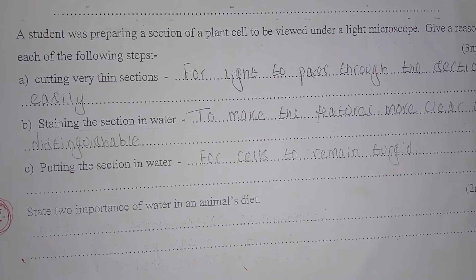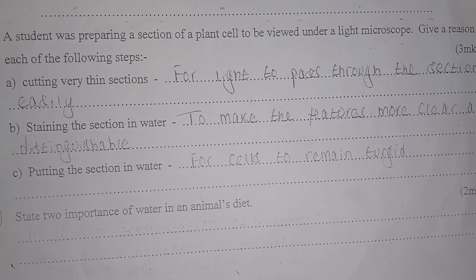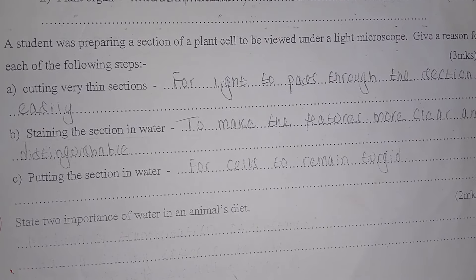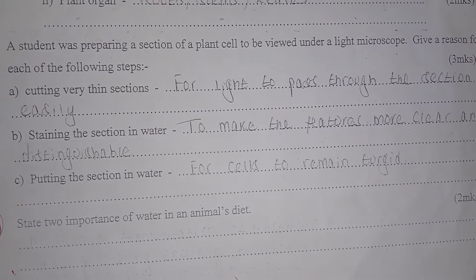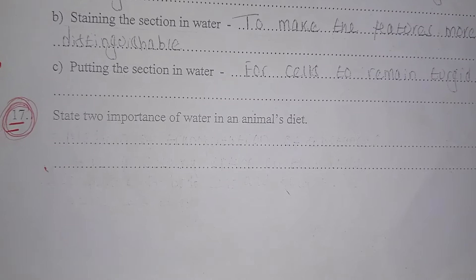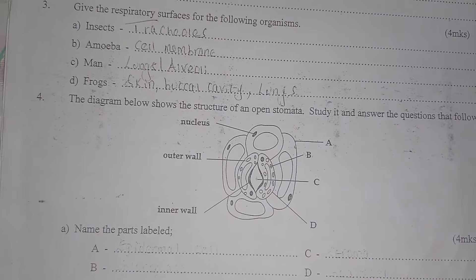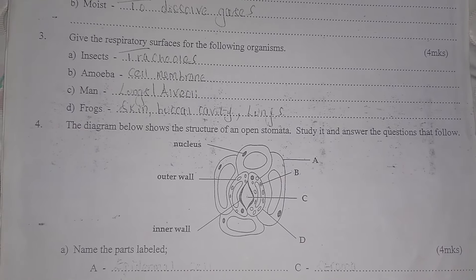A student was preparing a section of a plant cell to be viewed under a microscope. The reason for cutting very thin sections is to allow light to pass through. Staining is done to make features more clear and improve clarity. Placing them in water keeps cells rigid and avoids distortion.